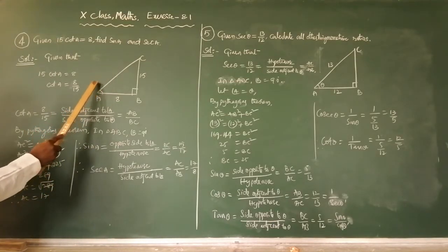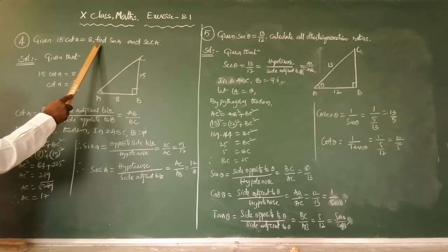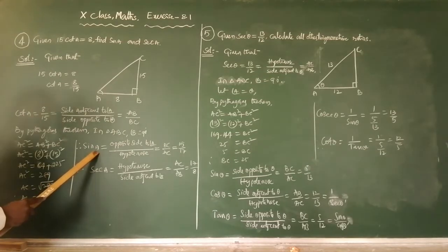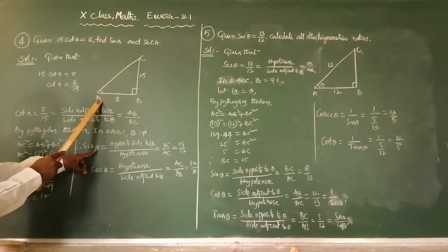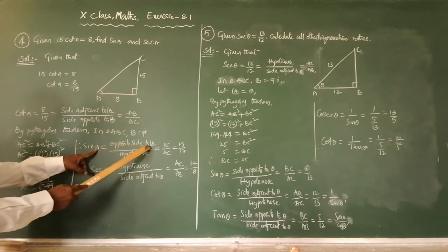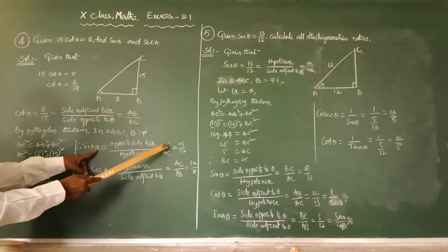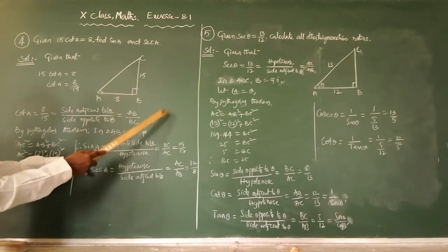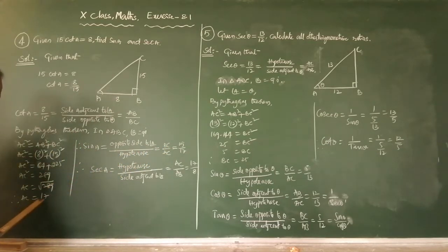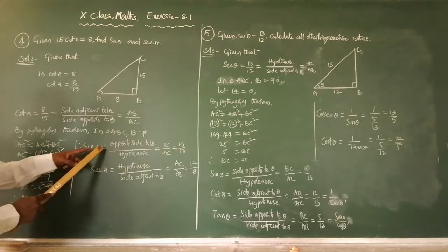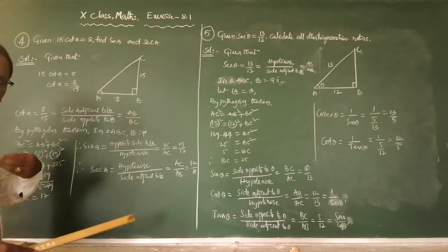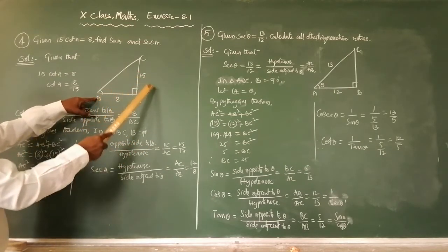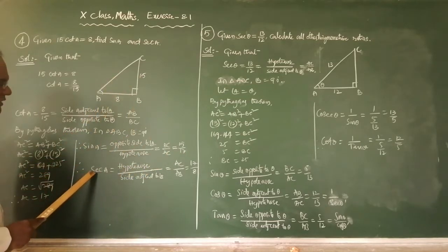We got AC equals 17, so now we have all three sides of the right angle triangle. Now we find sin A. Sin A definition: the ratio is the side opposite to angle A divided by the hypotenuse. Side opposite to angle A is BC, and hypotenuse is AC. BC equals 15 and AC equals 17, so sin A equals 15 by 17.